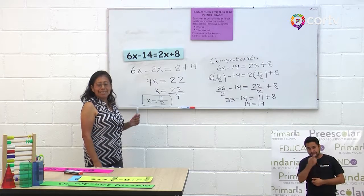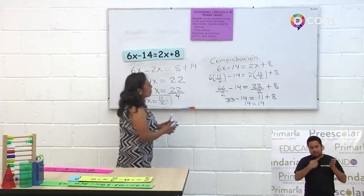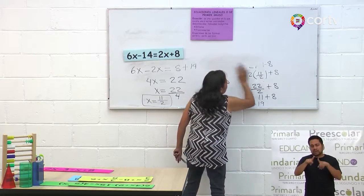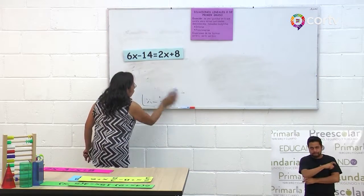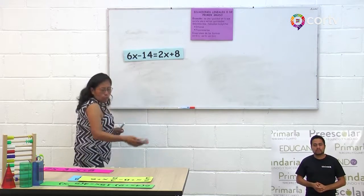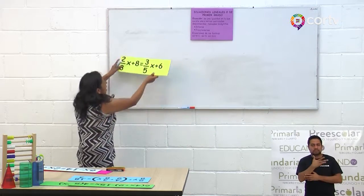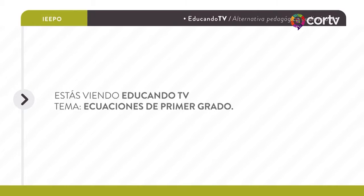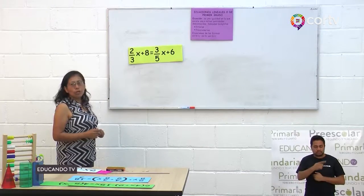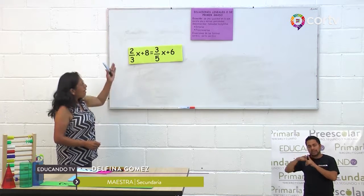Está fácil, está sencillo. Recuerden que partimos de lo más fácil a lo más difícil. Ahora vamos a hacer una ecuación fraccionaria. Hay ecuaciones enteras y hay ecuaciones fraccionarias. Aquí tenemos una ecuación fraccionaria: 2 tercios de X más 8 igual a 3 quintos de X más 6.